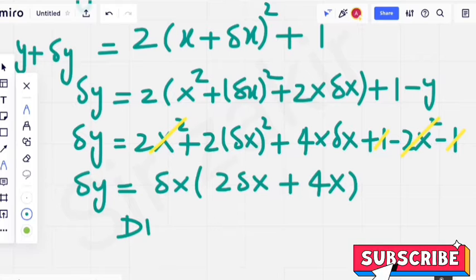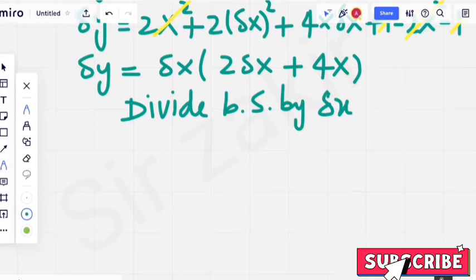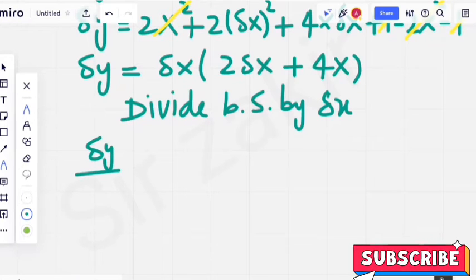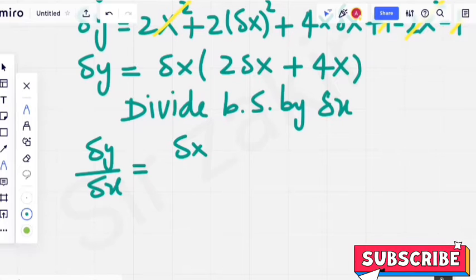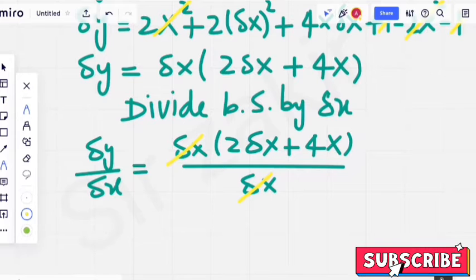And now we divide both sides by delta x. What change will that make here? delta y by delta x on left hand side. On right hand side it is delta x. 2 delta x plus 4x by delta x. They will get cancelled. Delta x cancels delta x.